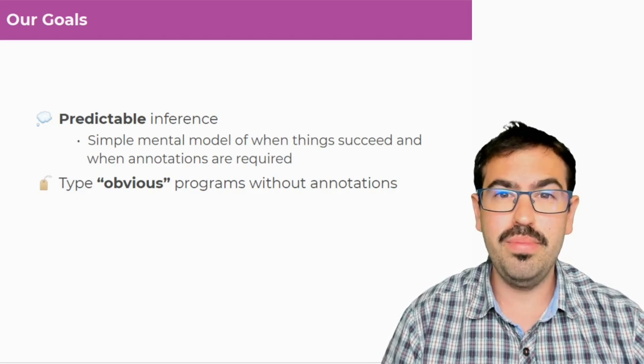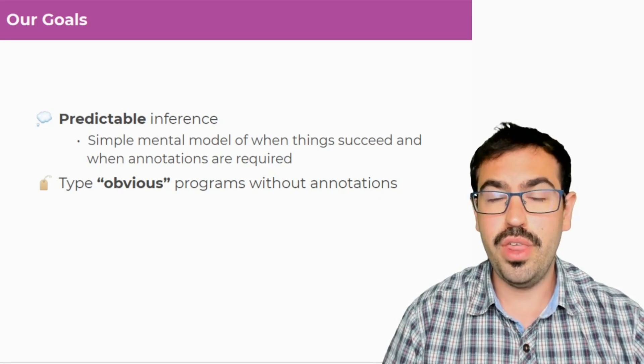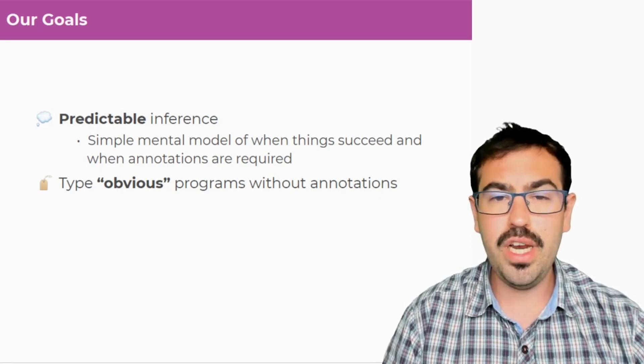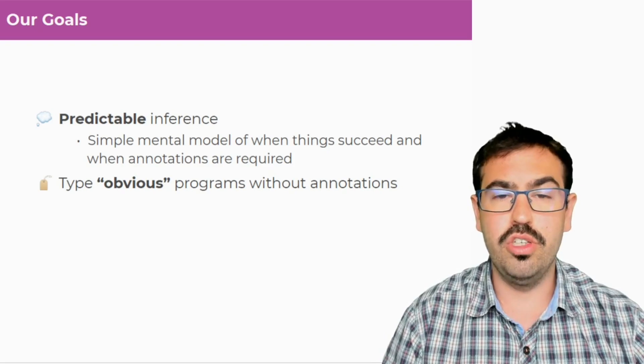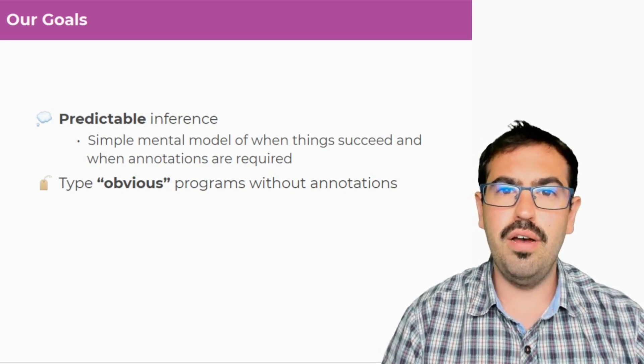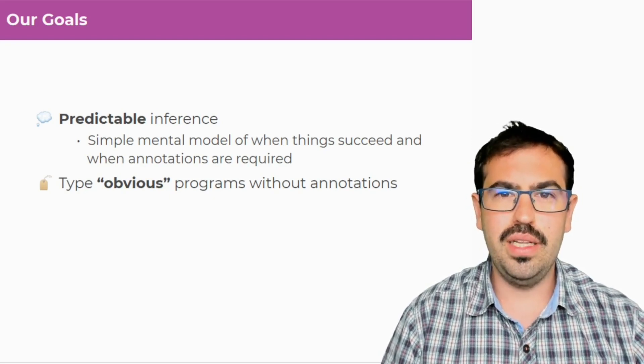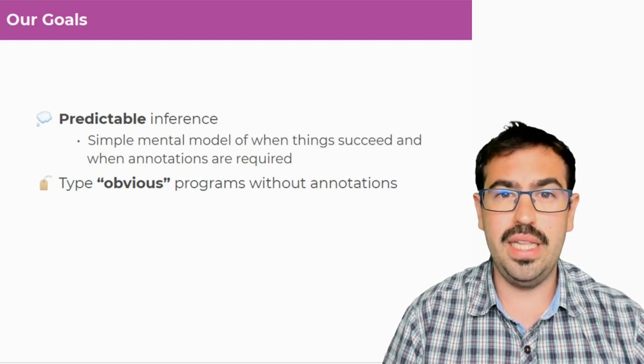We also want obvious programs to be typable without annotations. And of course, what obvious is is subjective. In the paper, we have a big list of examples which we think should be typable without annotations. And many of the examples I've shown here are also typable without annotations. So we really want to push for getting as much impredicative information as we can, so that developers don't have to annotate all the time.